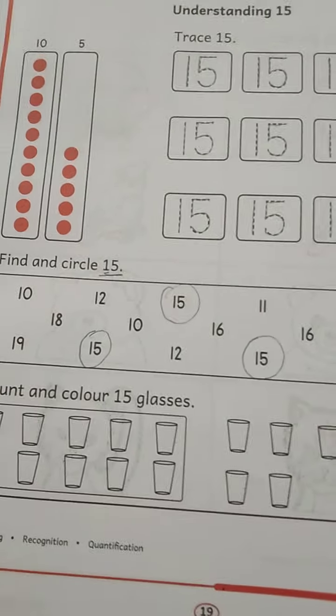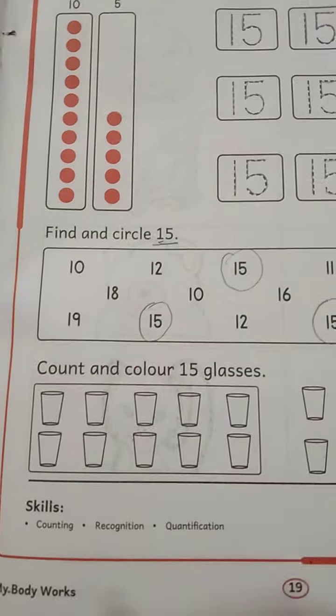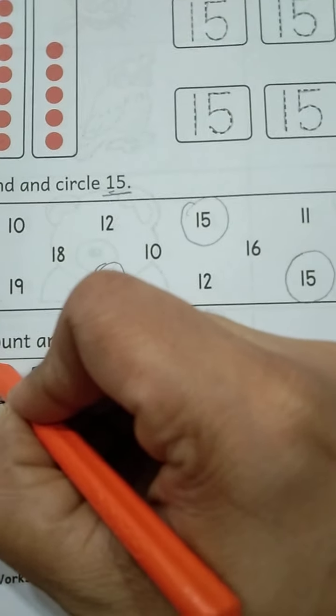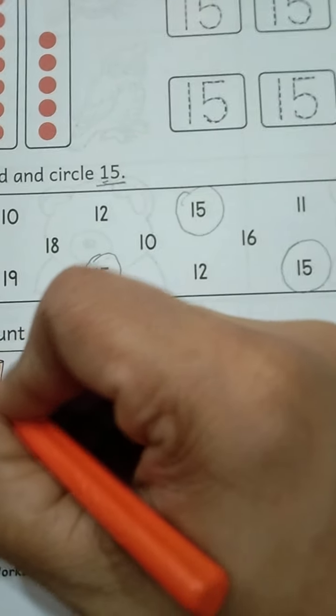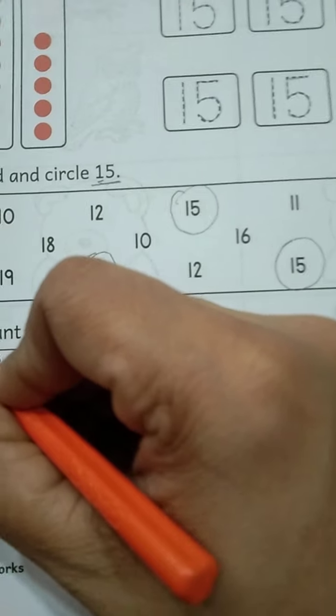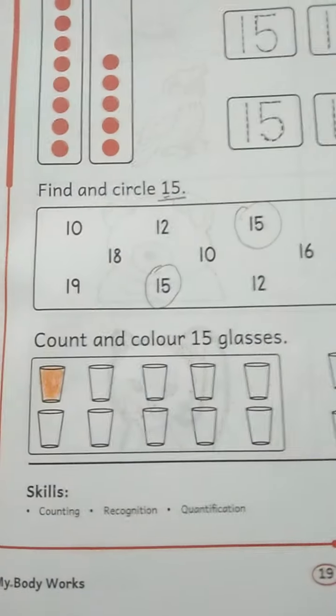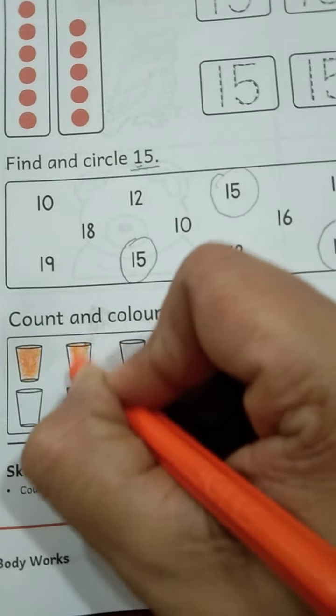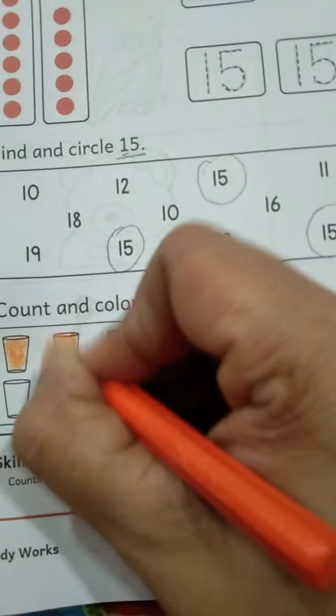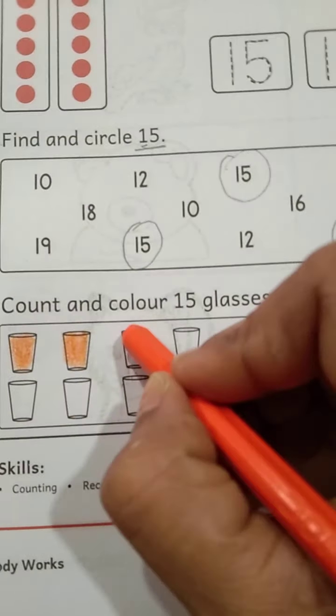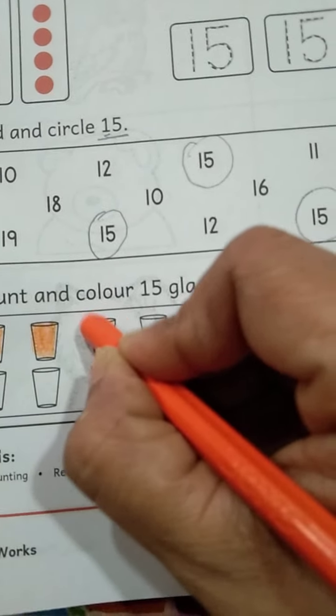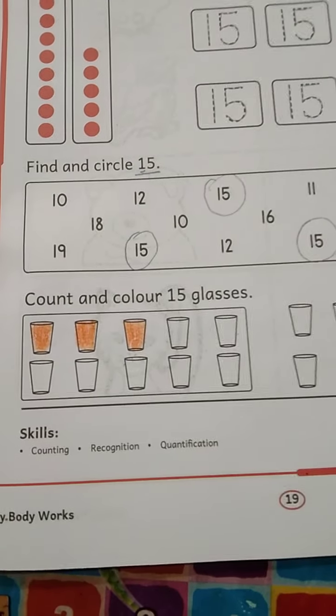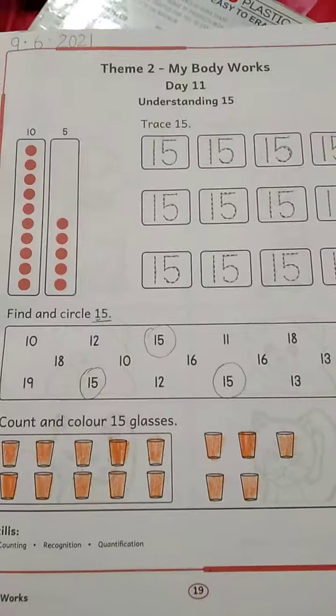So what will we do? We will color these glasses. I have taken orange color. You can take any color of your choice. Slowly, because glasses are too small. Color should not go out of the boundary. Our glasses should look neat and clean. Likewise, color all the glasses.